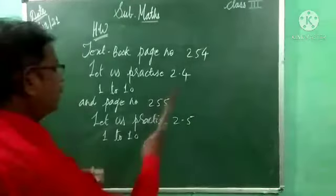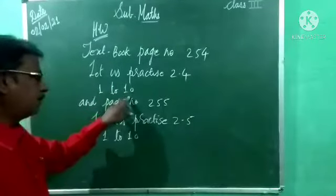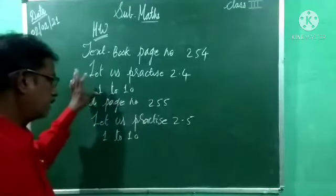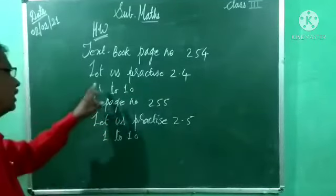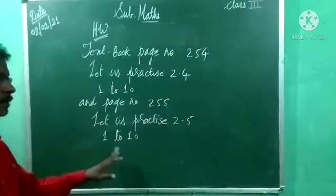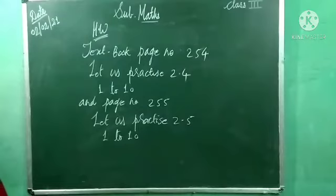Now homework: textbook page number 254, let us practice 2.4, 1 to 10. These examples are based on addition. And in the same way, textbook page number 255, let us practice 2.5, 1 to 10. 10 examples based on subtraction. Understood? So try to solve these 20 examples. Bye-bye. Thank you.